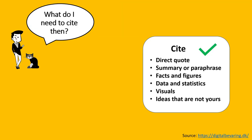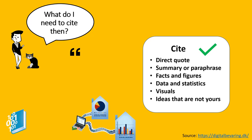Now let's move on to what you do need to cite. You do need to cite the following: when you directly quote, summarize, or paraphrase; facts that are not common knowledge; data and statistics from someone else's research; and visuals such as infographics, photographs, and maps.